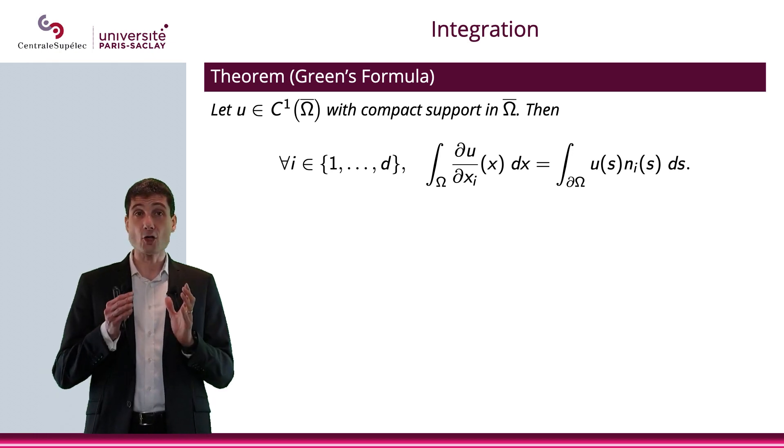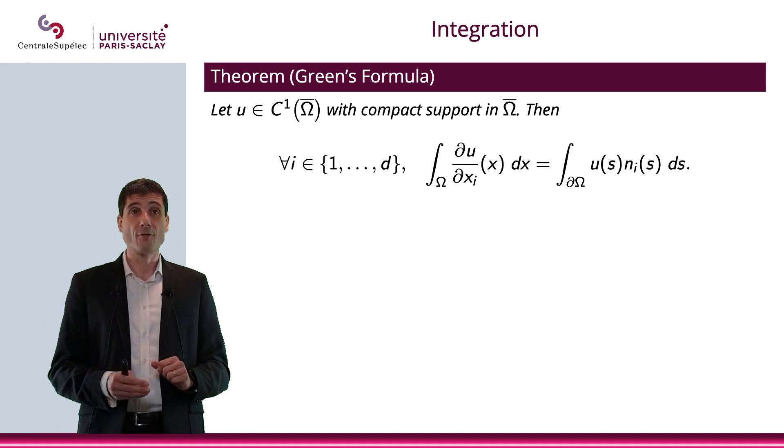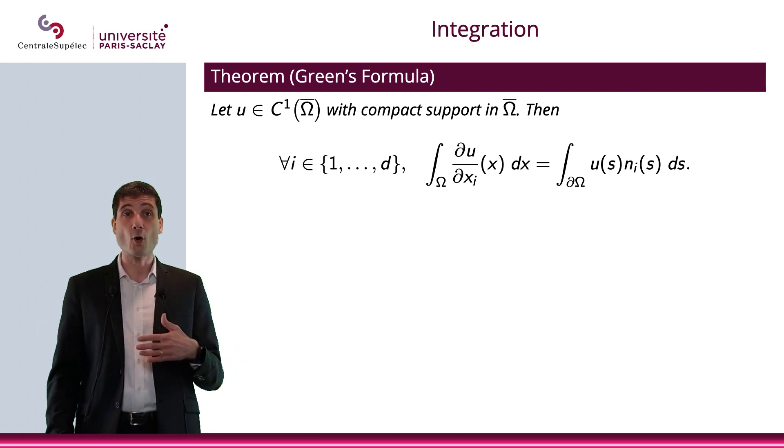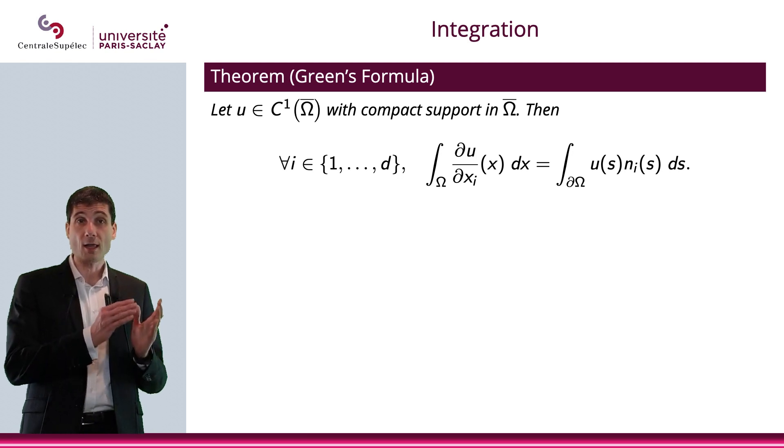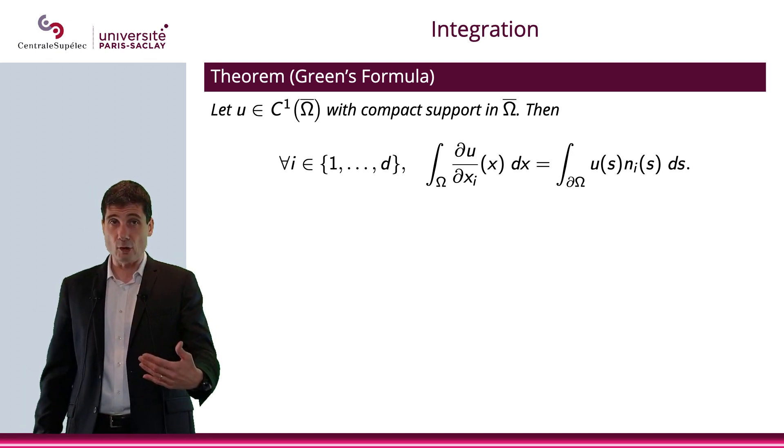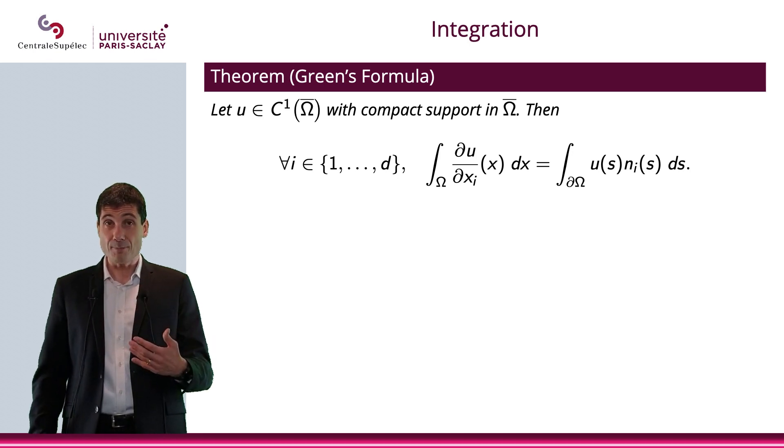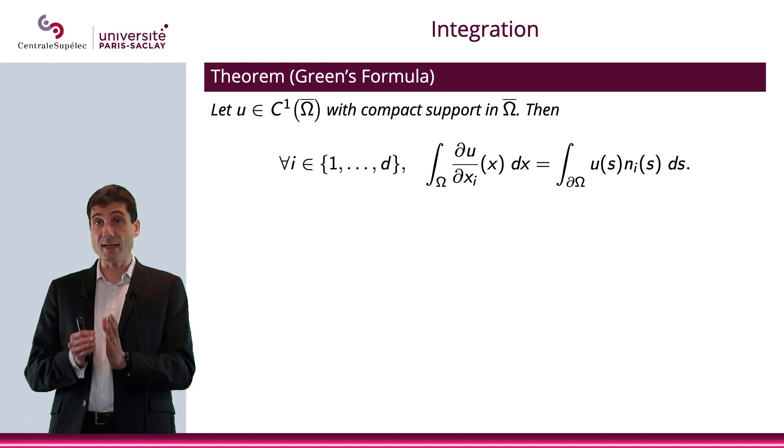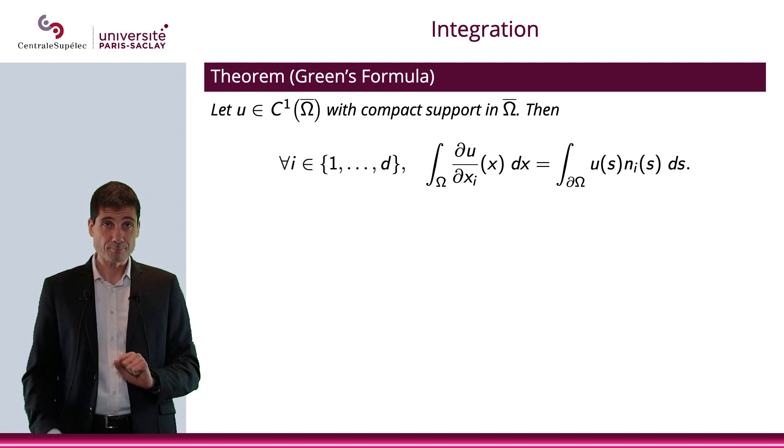Now, let me consider a function u, which is C¹ of a domain Ω, and I'm going to take the closure of Ω. So it's Ω̄. It needs to be C¹ all the way to the boundary. And I assume that it will be with compact support in Ω̄. Then for all i in between 1 and d, what is the dimension of my space Ω, then the integral of the partial derivative of u with respect to x_i will be the integral on the boundary of u(s)n_i(s) ds. Where again, n_i is the outward normal unit vector field.